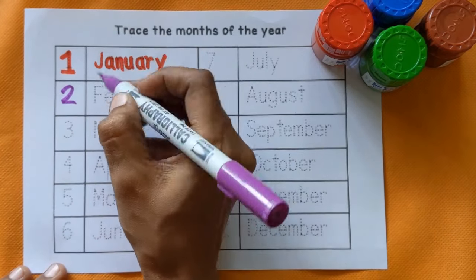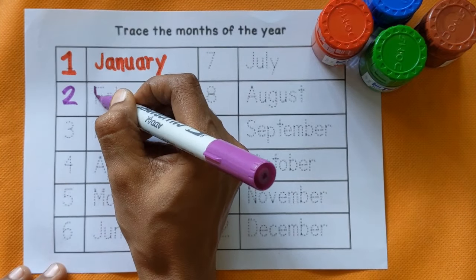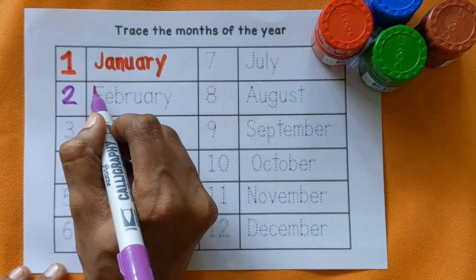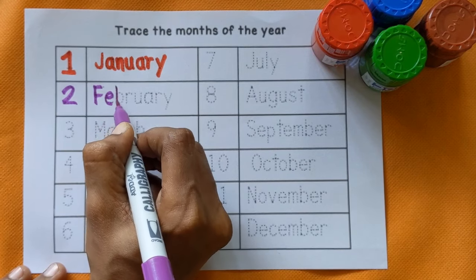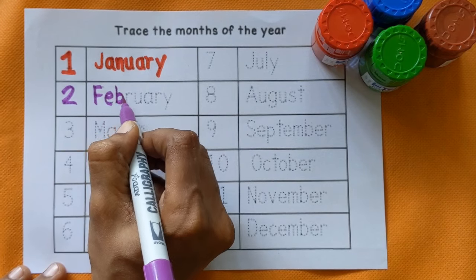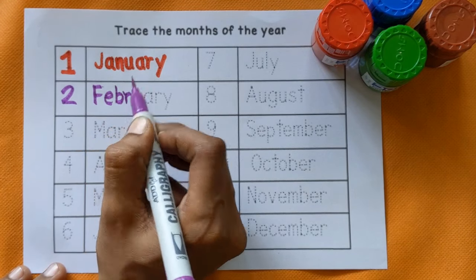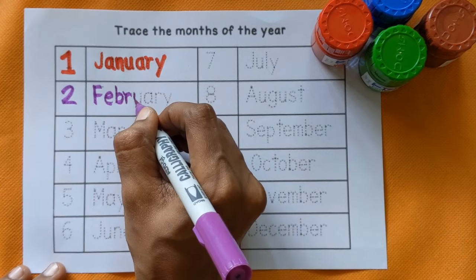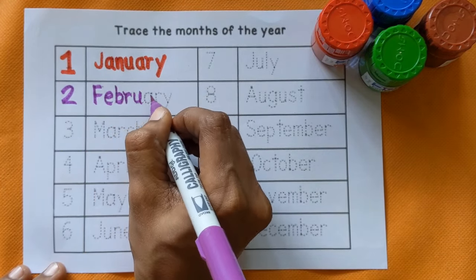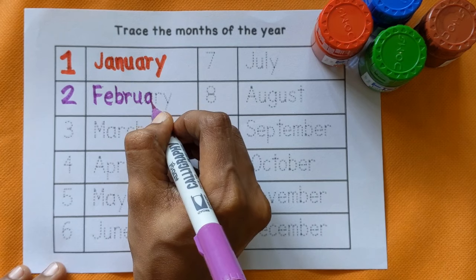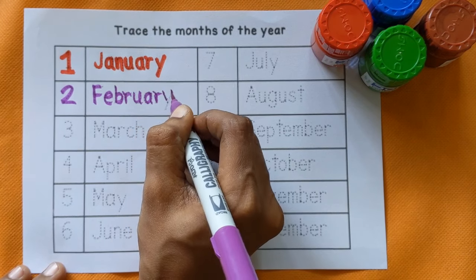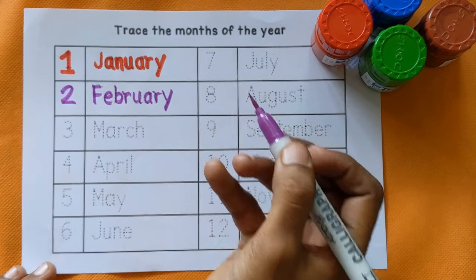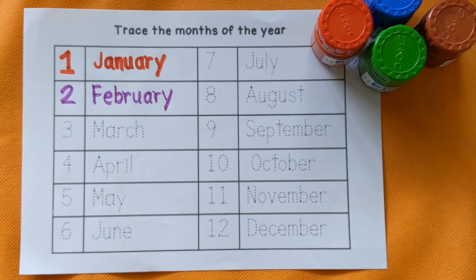2. F, E, B, R, U, A, R, Y — February, purple color.